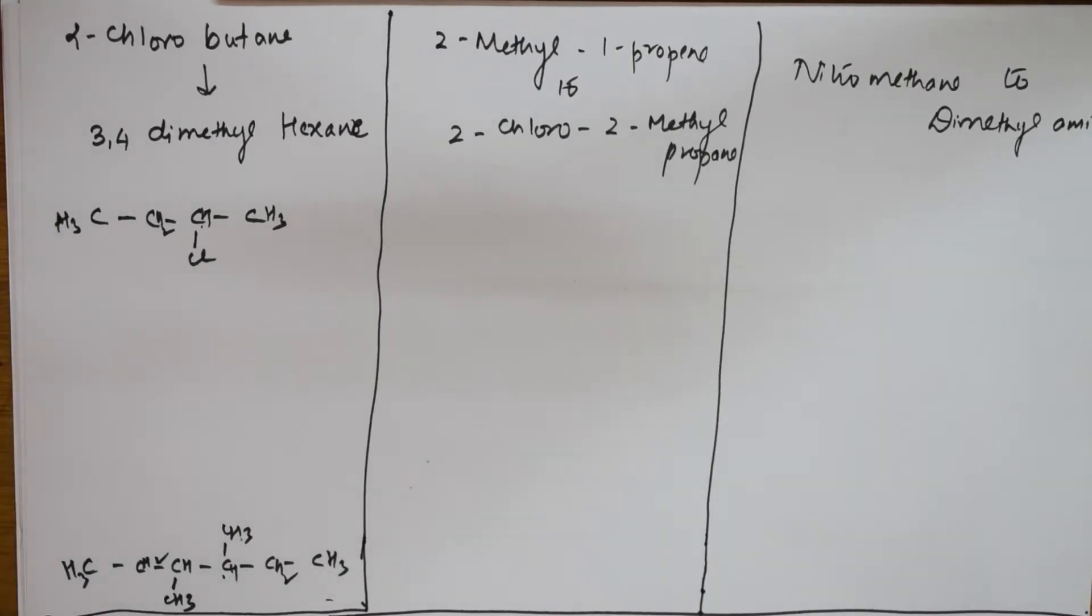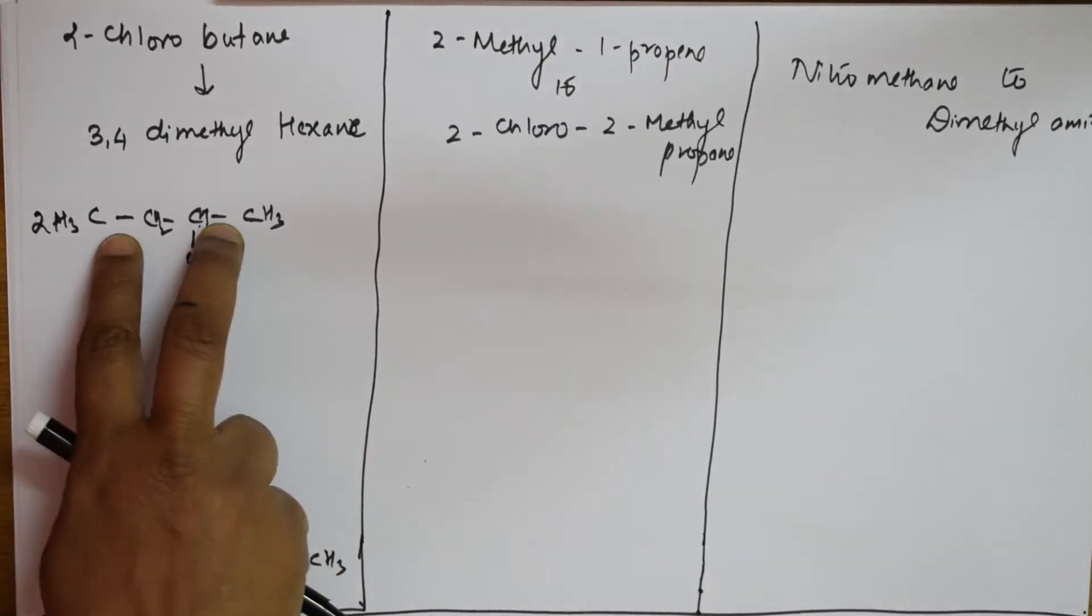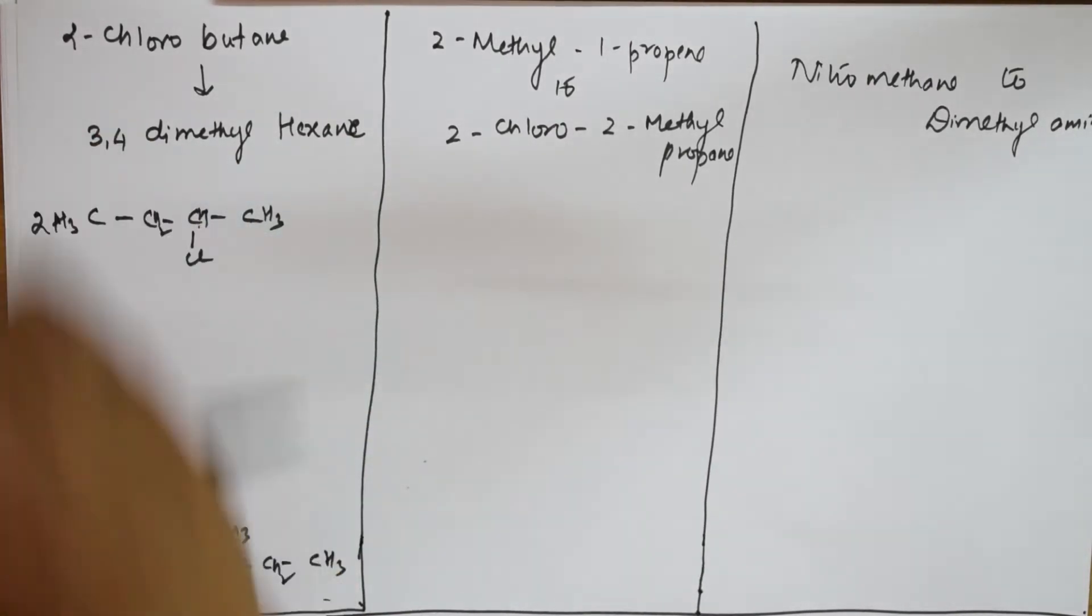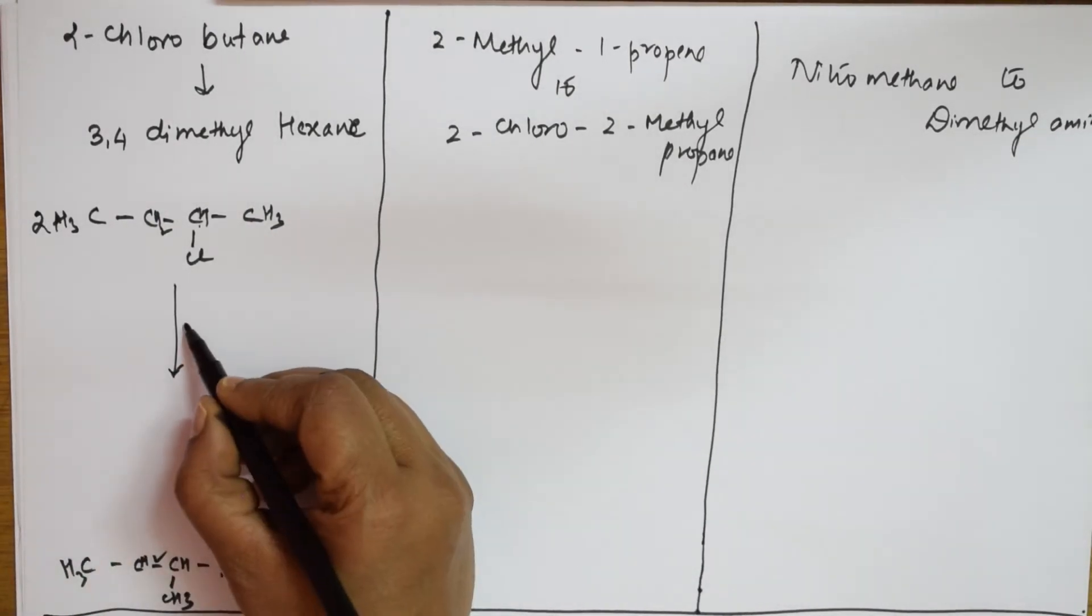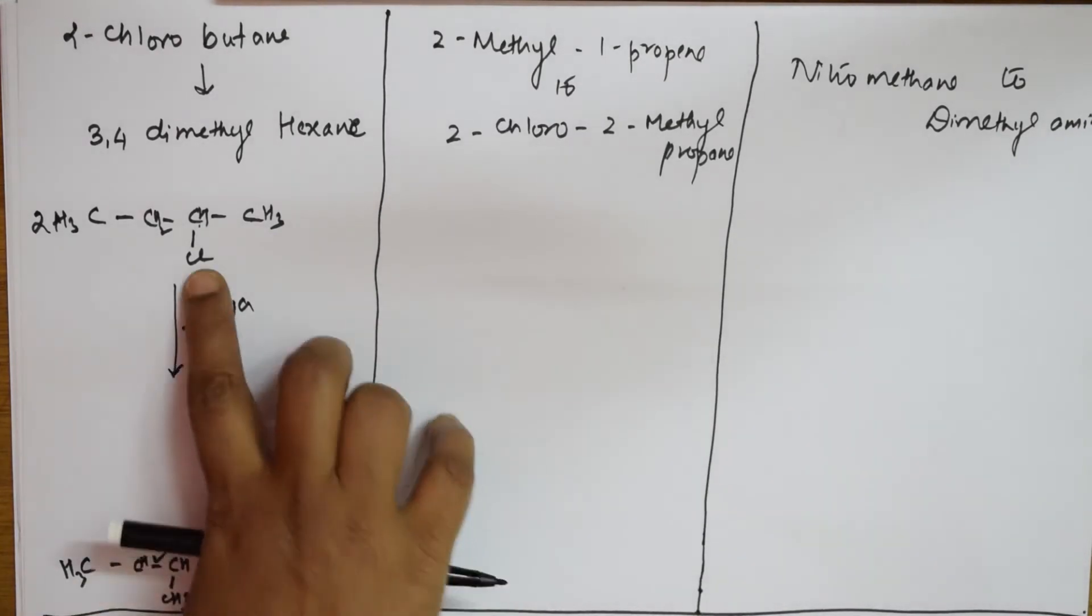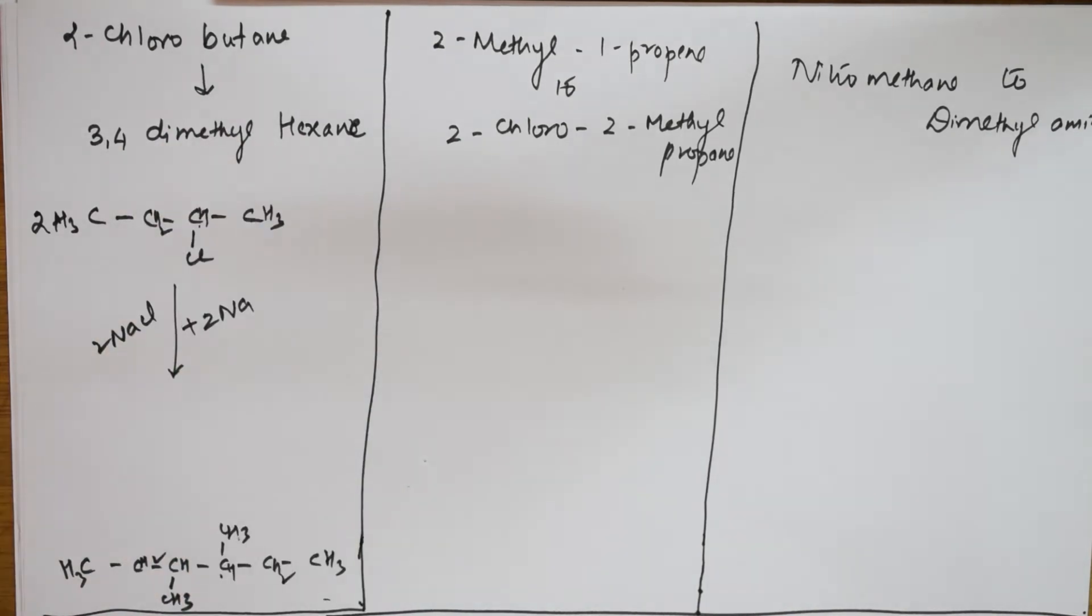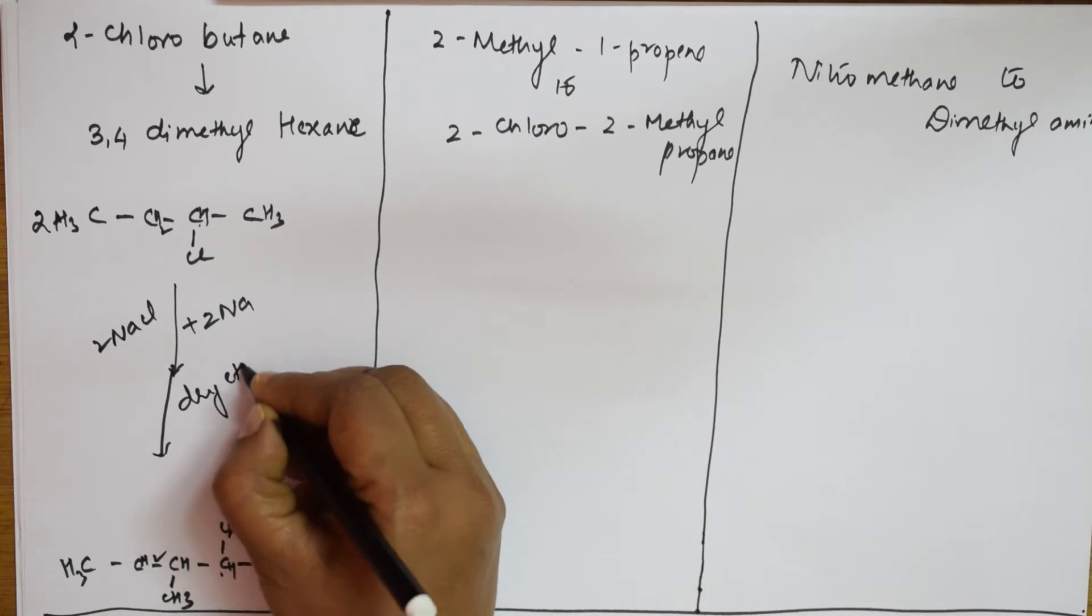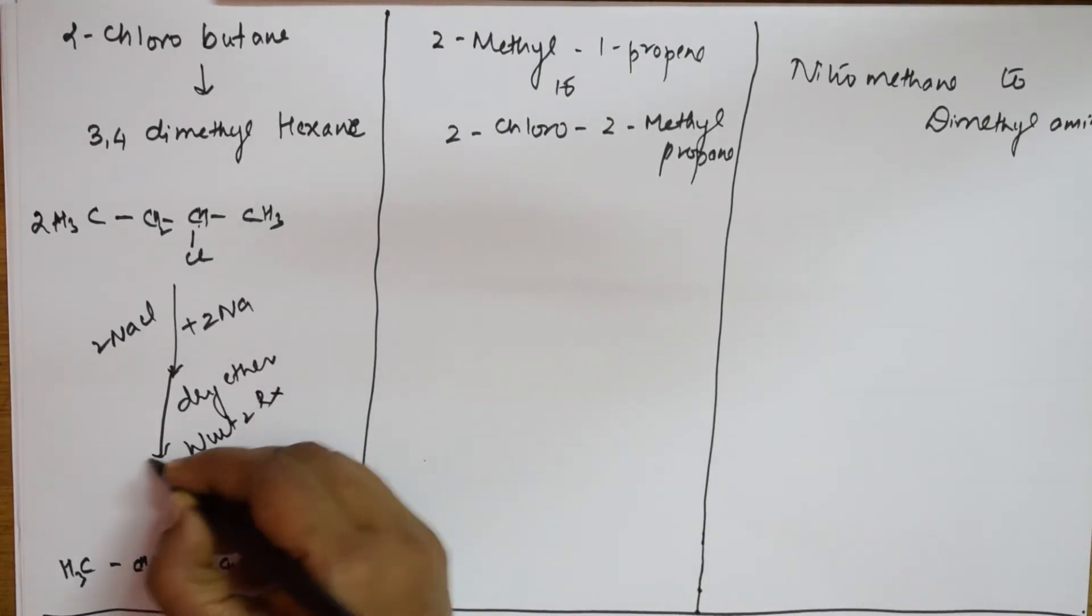I can comfortably add one more group to this, so I'll make this two. Four carbons here, eight carbons here. If I make this as two, that means two times four - four plus four equals eight. I can simply add to this the Wurtz reaction with 2Na. Two Na comes out as NaCl. This is in the presence of dry ether. What is the reaction? Wurtz reaction.